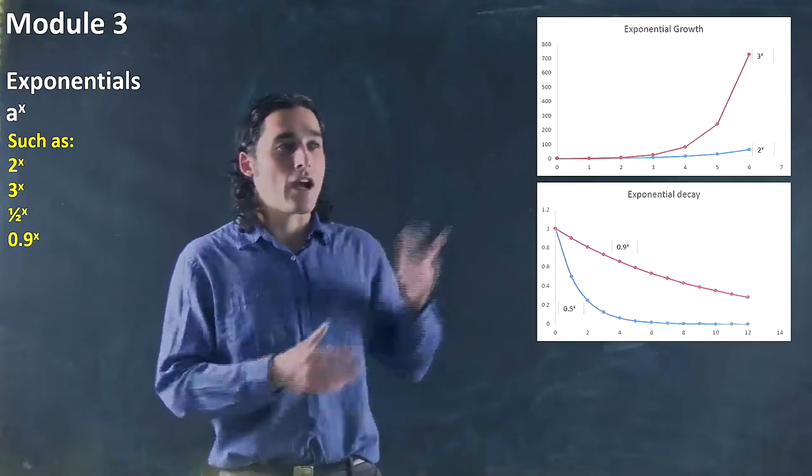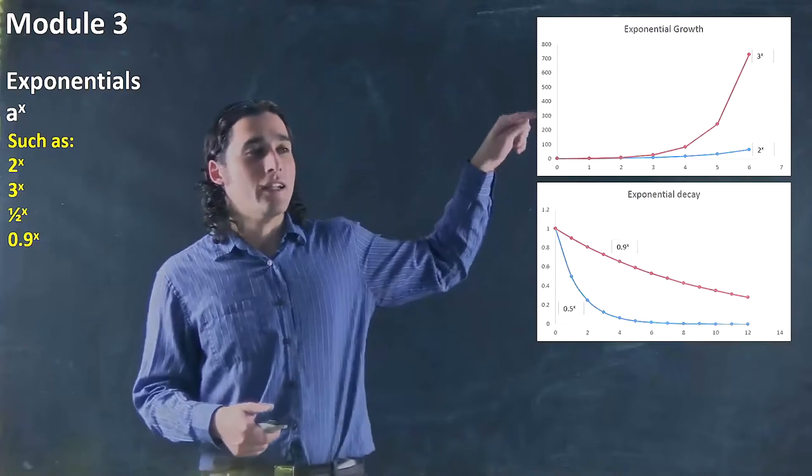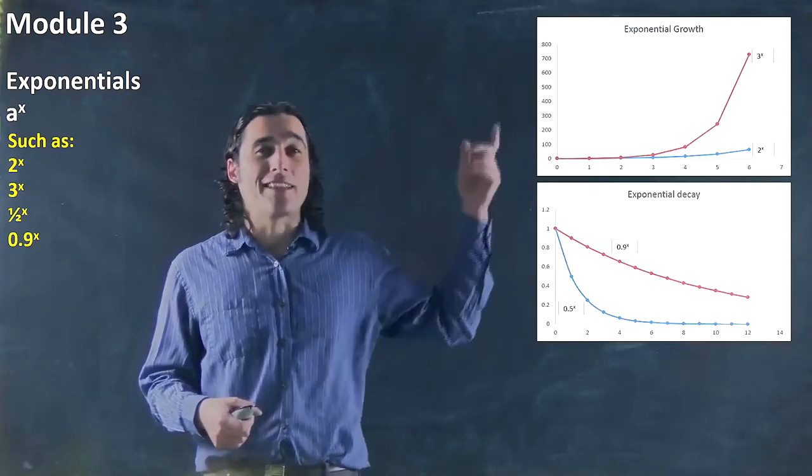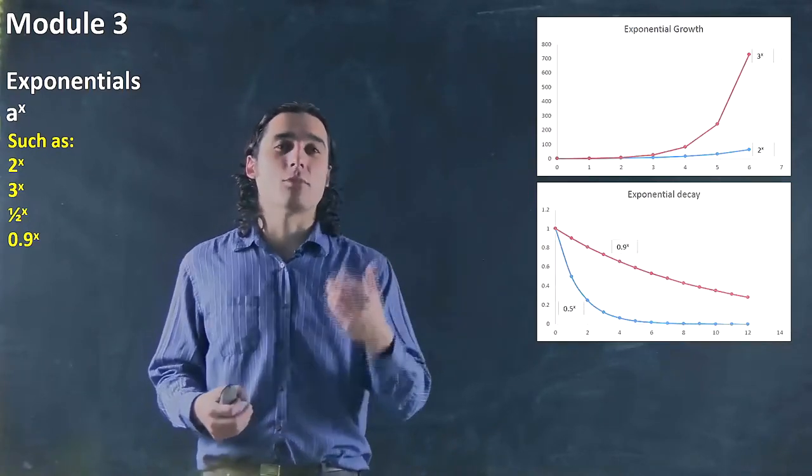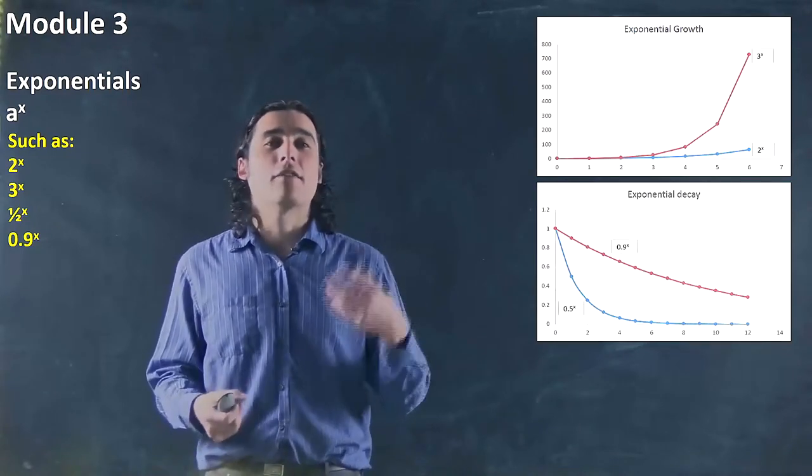And if we look at this graph, I actually compare the different ones. What we've got is x, or 2^x and 3^x. And we can see 3^x grows much faster. The bigger the base, the faster it's going to grow.